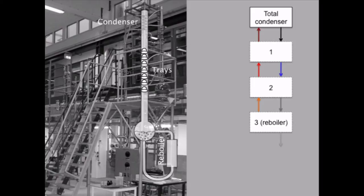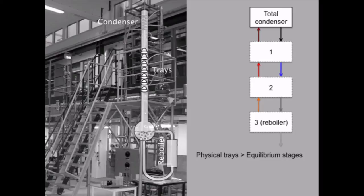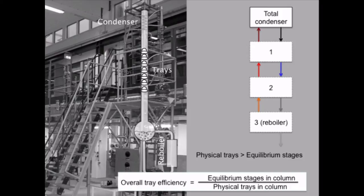Here we have drawn three different equilibrium stages. The total condenser doesn't add anything to the separation, although it's very important for the distillation column. But the reboiler is an equilibrium stage. The number of physical trays is always larger than the number of equilibrium stages, and we can write the overall tray efficiency as equilibrium stages in the column divided by the physical trays in the column. Note that we take equilibrium stages within the column divided by physical trays within the column — only these two — because the reboiler is outside the column.